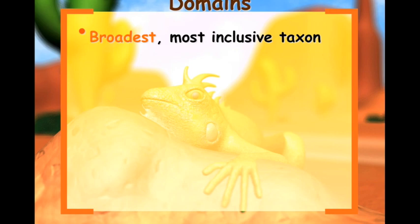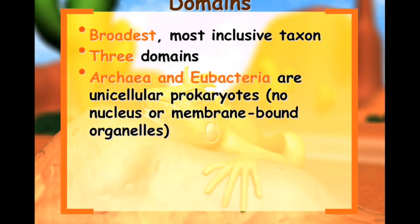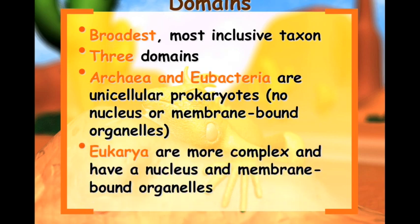Our domains: the domain is the broadest, most inclusive taxon. We have three domains. Archaea and Eubacteria are unicellular prokaryotes — a prokaryote has no nucleus or membrane-bound organelles. Our last domain is Eukarya, which is more complex and has a nucleus and membrane-bound organelles. So our three domains are Archaea, Eubacteria, and Eukarya.